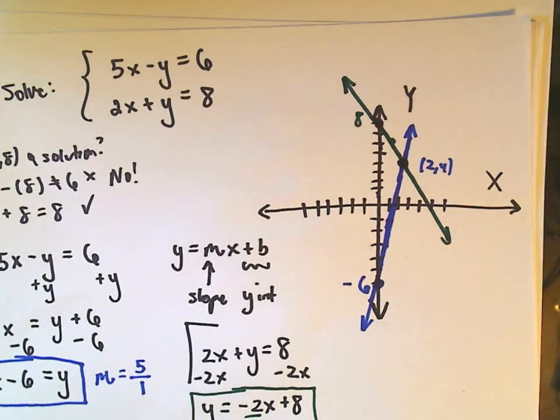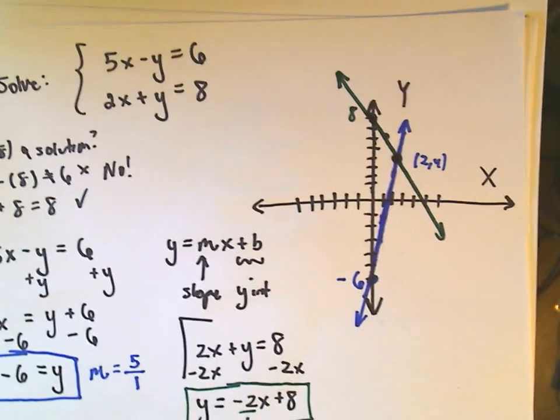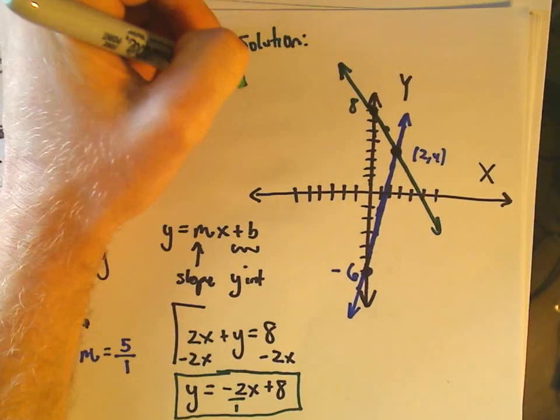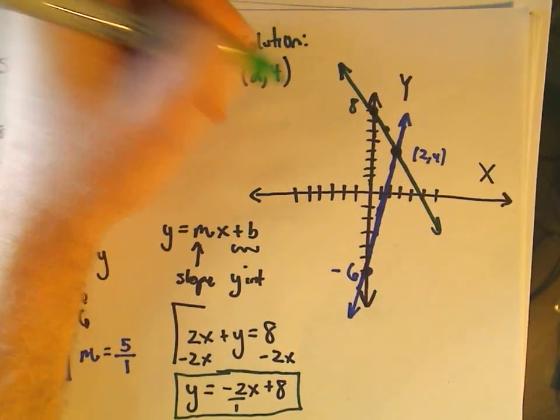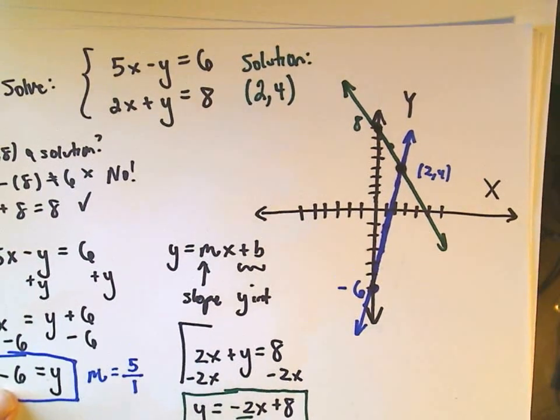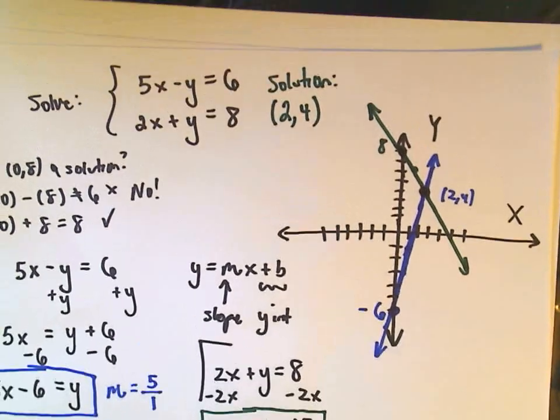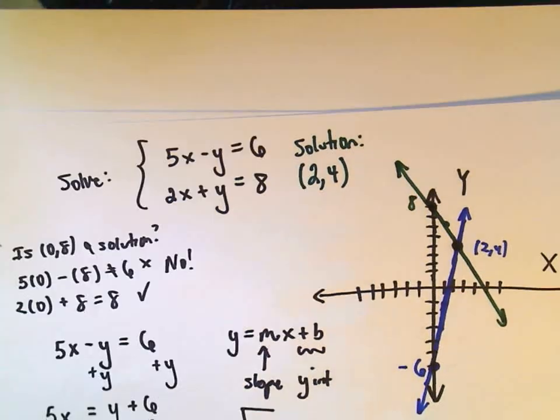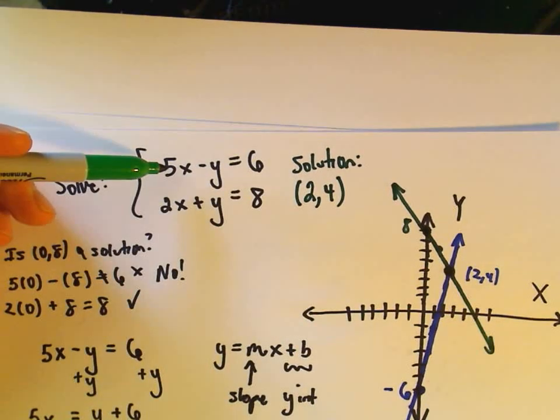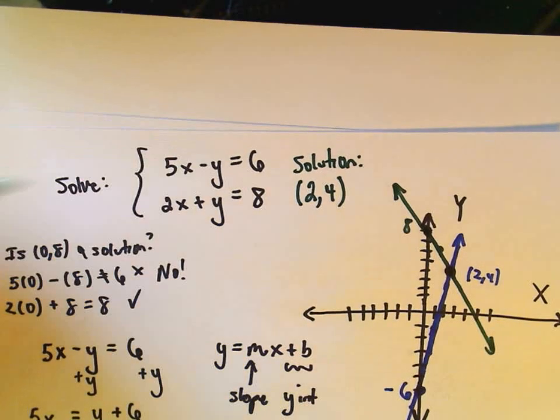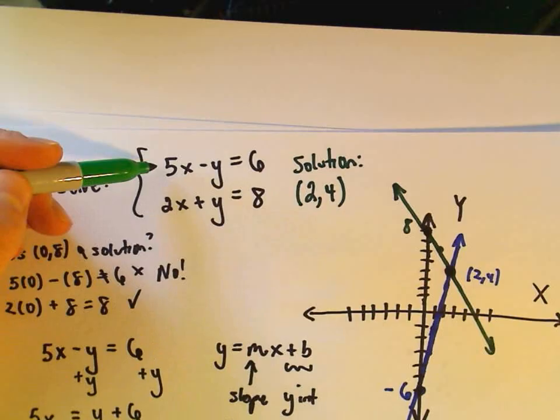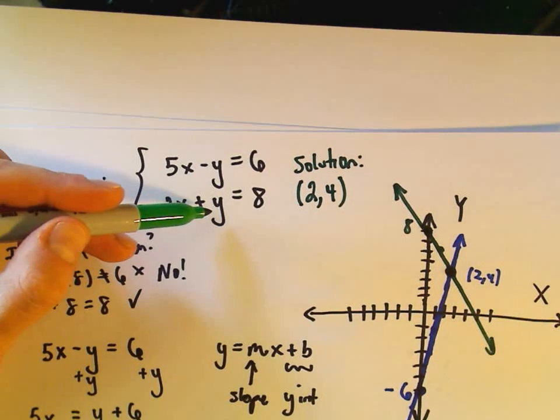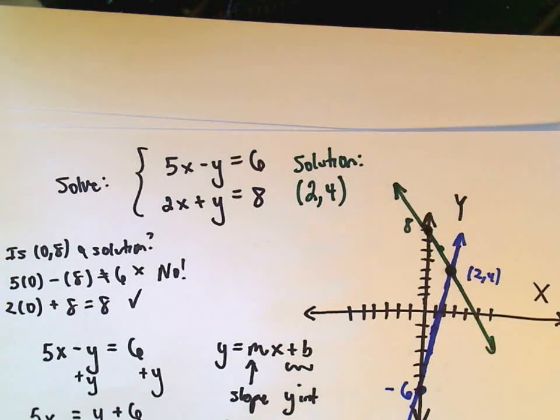That's where these two lines crisscross. And what that means is it says a solution to this system of equations is the point 2 comma 4. And notice you can check these. This is something you can always check on a test or a quiz if you have a second. Notice if you plug in x equals 2 and y equals 4, we do get 6 out for the first equation. Notice if you plug in x equals 2 and y equals 4, we get 8 out for the second equation.